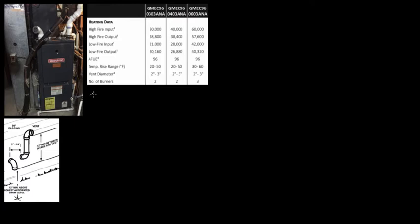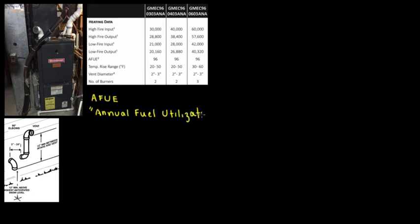To begin with, we're going to start with the name. So AFUE — this stands for Annual Fuel Utilization Efficiency. This is in order to obtain the efficiency of the furnace.